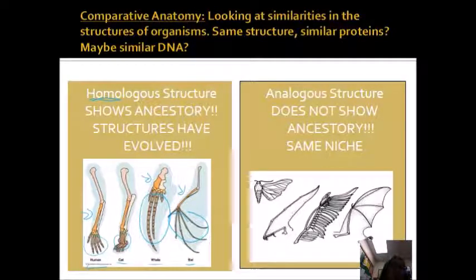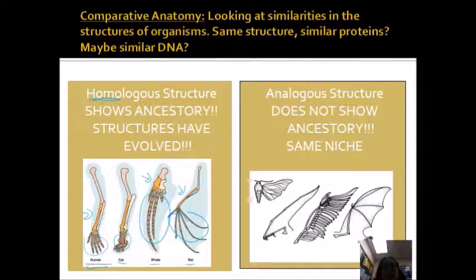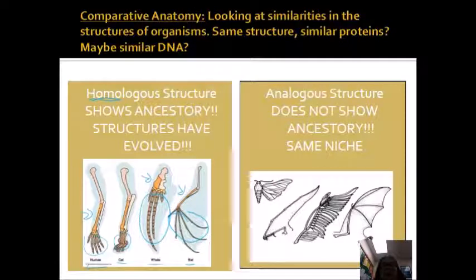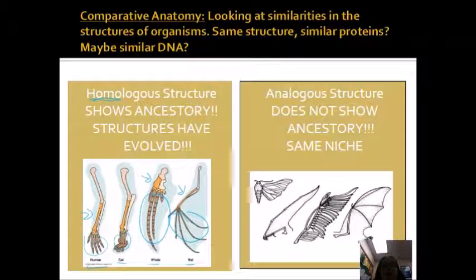The human has the arm, the cat has the leg, the whale has the fin, the bat has the wing — these all must have originated from a common ancestor. However, they diverged into different environments and when they did, they were exposed to different environmental pressures, which selected for different traits.